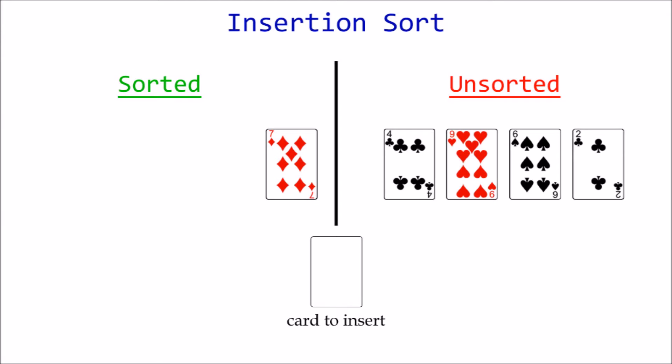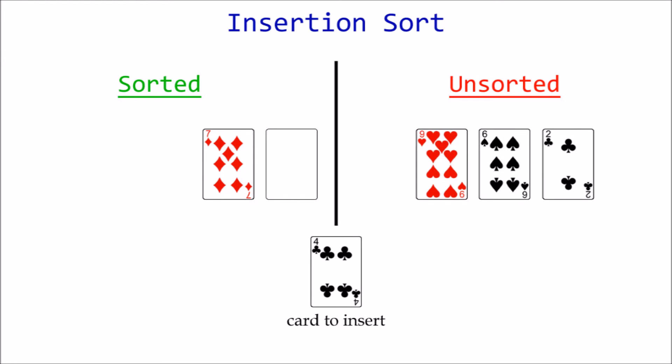The first unsorted card is 4, so that's where we'll start. Now focus your attention on the sorted section. To find out if this is the correct insertion spot, we compare the card to insert with the adjacent card. 4 is less than 7, so this is not the right place.